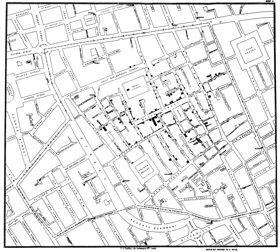Urban geography also draws on ideas from other branches of human geography to see their involvement in the processes and patterns evident in an urban area. Subfields include economic geography, population geography, and settlement geography. These are clearly not the only subfields that could be used to assist in the study of urban geography, but they are some major players.